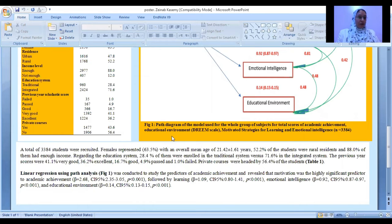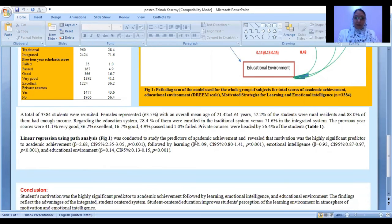When we conducted linear regression using path analysis diagram as shown in Figure 1 to study the predictors of academic achievement, it revealed that motivation was a highly significant predictor with beta equal 2.68, followed by learning, emotional intelligence, and finally educational environment with beta 0.40.